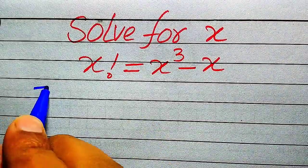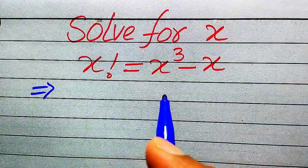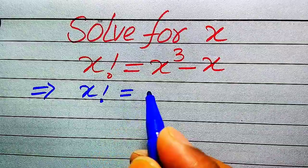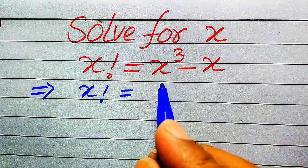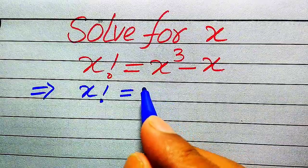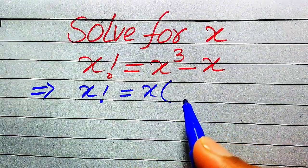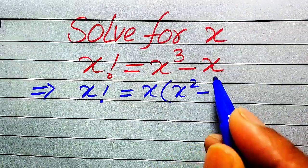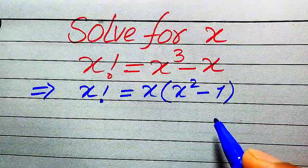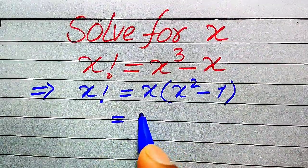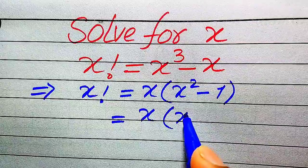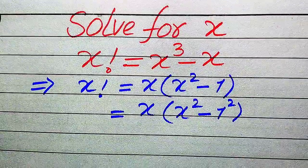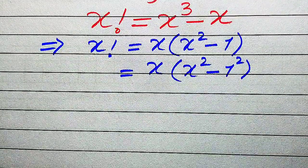Now we move towards the solution. The first thing we do is focus on the right hand side. We have x factorial equals x cubed minus x. You can see that x appears in both terms on the right hand side, so we take x as a common factor. When we factor out x, we get x times (x squared minus 1), and we write 1 as 1 squared.